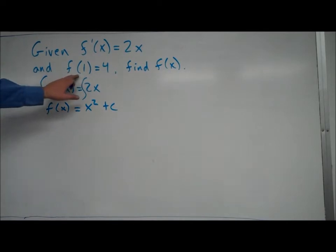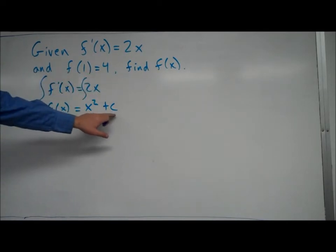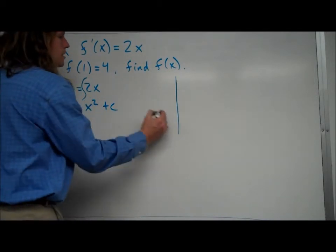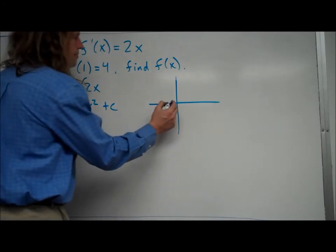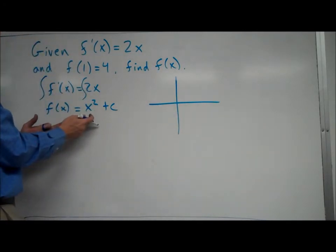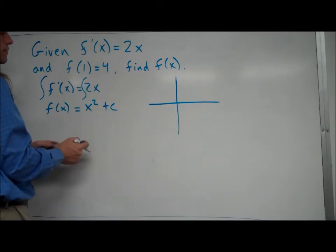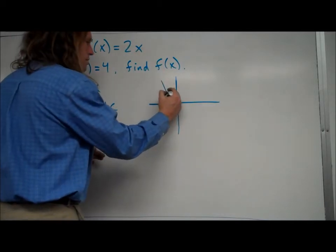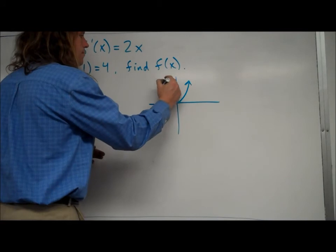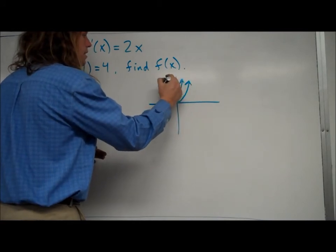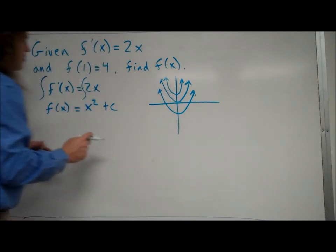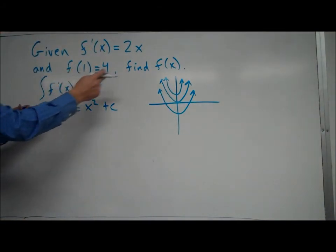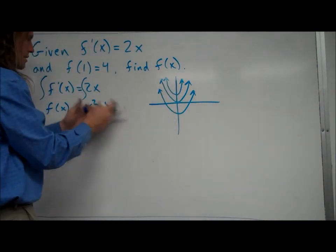Now, what this initial condition will do, it will tell us exactly what c is. Because let me just take a quick sketch right here. f of x equals x squared, that's just a parabola, and it happens as the center of the parabola is at zero. The plus c, all that would do is shift it up or down. So if c were zero, it would be right here. And if c was a positive number, it would be up here somewhere. If c was a negative number, it might be down here somewhere. Well, what the initial condition will do is tell us exactly which one of those it is. So we'll know exactly what c is.